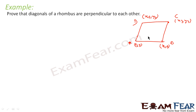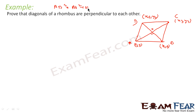Now to prove that the diagonals are perpendicular, let me draw the diagonals. To prove they are perpendicular, if we can prove that AB² = AO² + OB², that means triangle OAB is a right triangle, which means it is perpendicular. One thing we also know about a rhombus is that the diagonals meet at the midpoint.